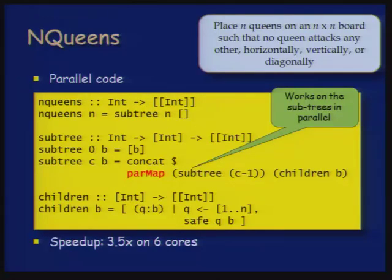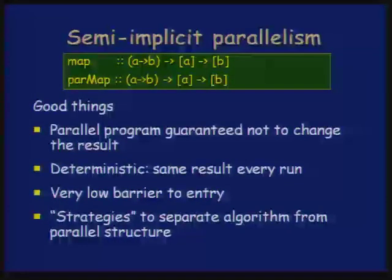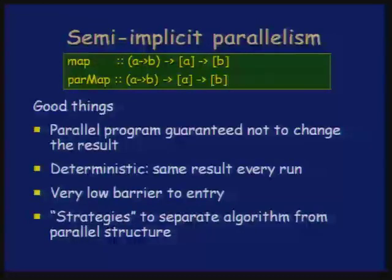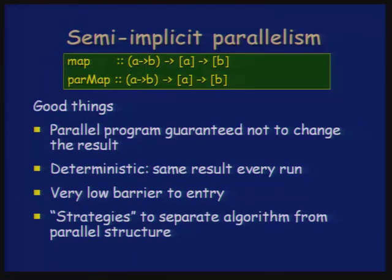This particular program really does work in parallel — on a six-core machine it goes three and a half times as fast, using the compiler that comes out of the box. You might think three and a half times on six cores isn't very cool, but that was a six-character change to your program, using cores that were there idle anyway. The result is also deterministic: if you change map to parMap, you get the same answer every time. Debugging non-deterministic concurrency errors on parallel machines is really very painful, and this avoids that class of problem entirely.